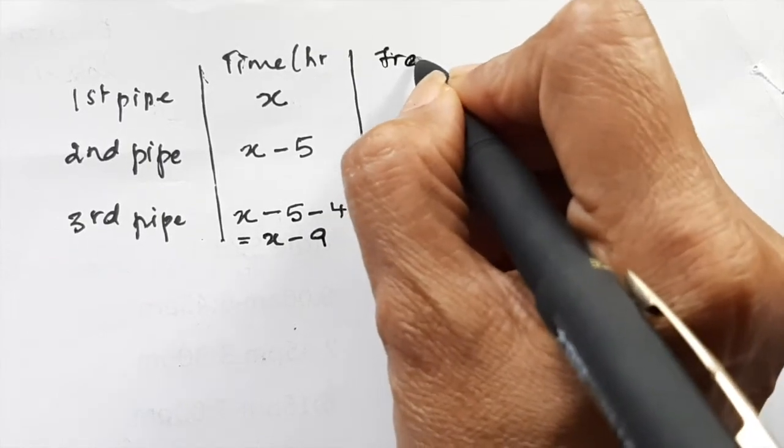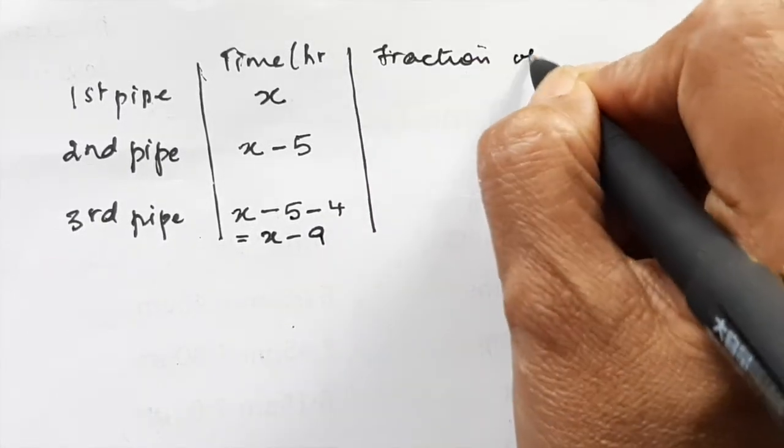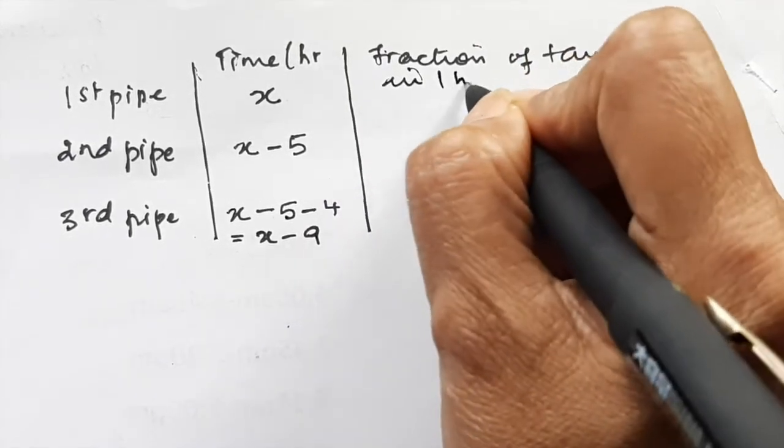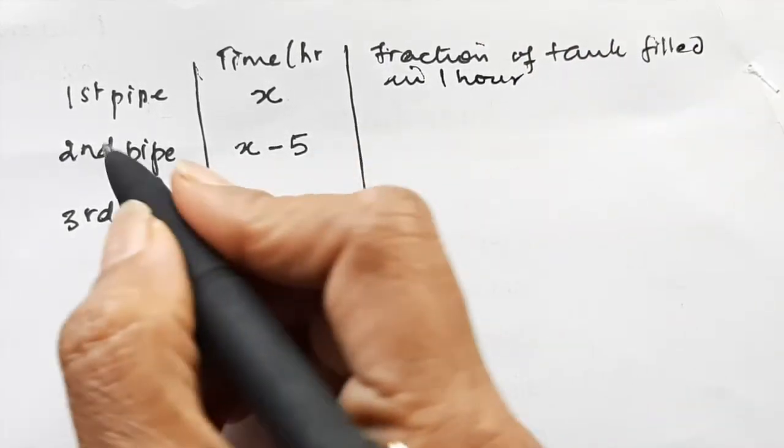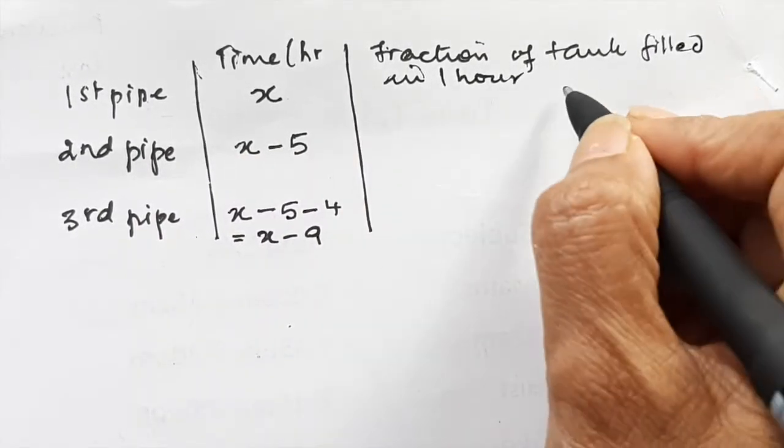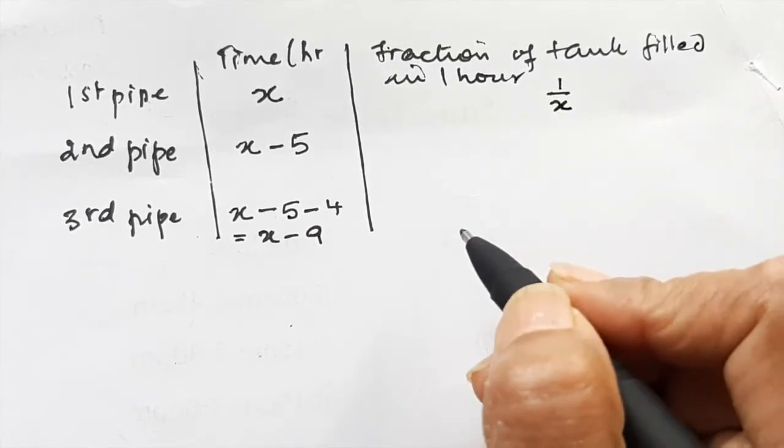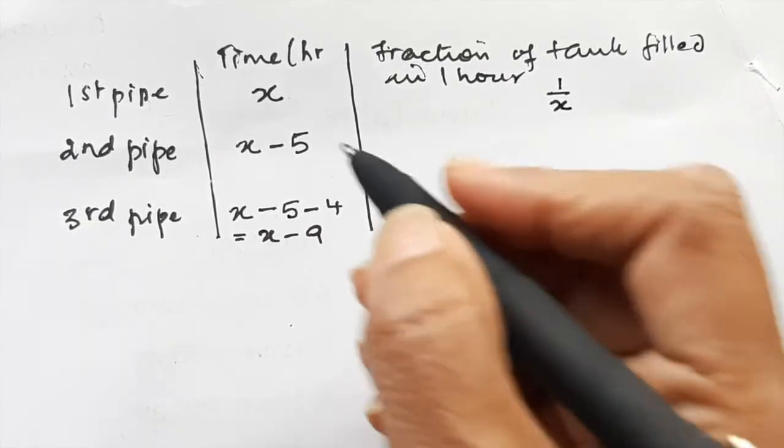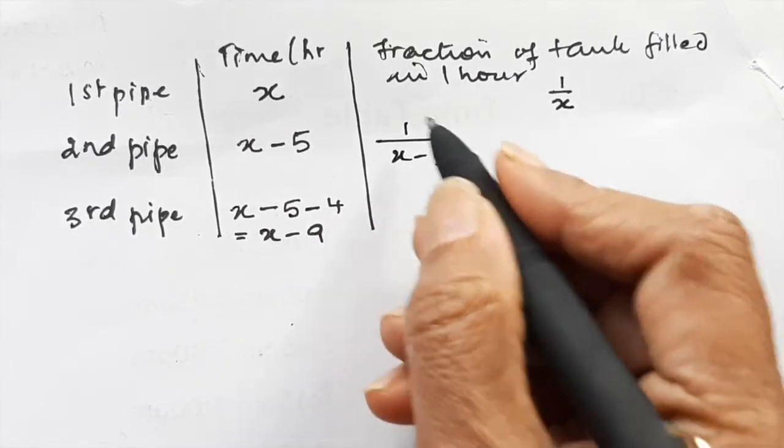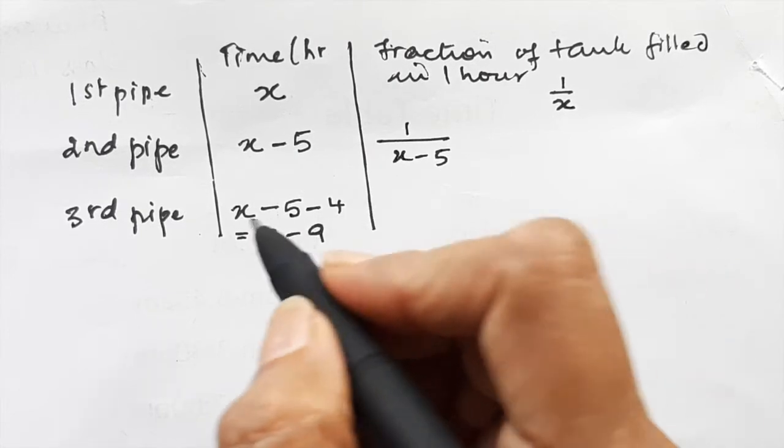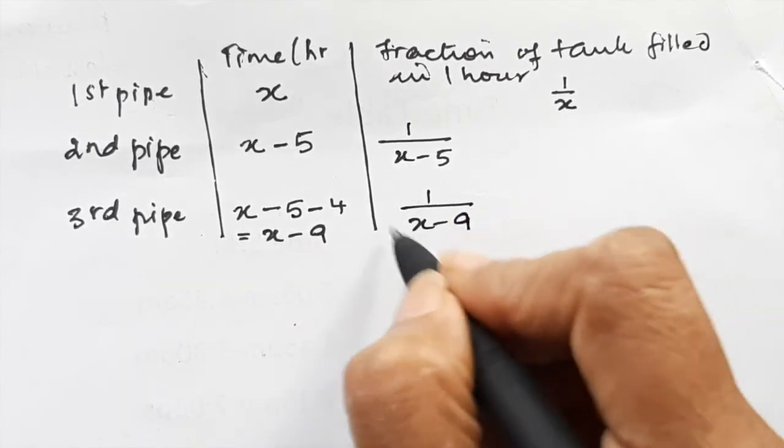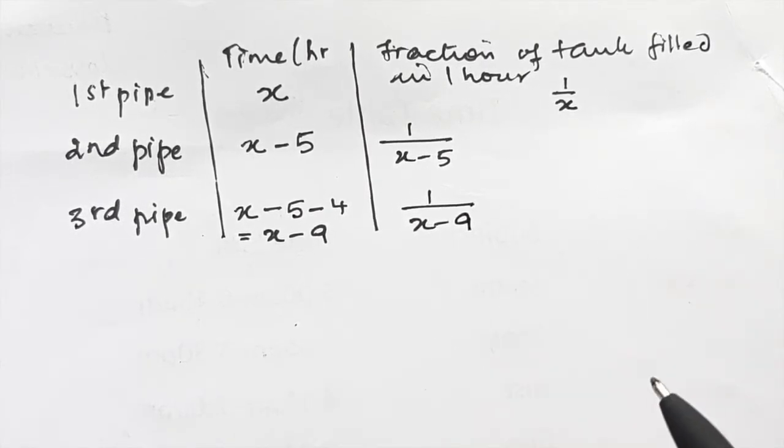Now we take the fraction of tank filled in one hour. The first pipe, if it takes x hours to fill the tank, then in one hour it will fill 1/x fraction. The second pipe will fill 1/(x-5) fraction, and the third pipe will fill 1/(x-9) fraction of the tank in one hour.